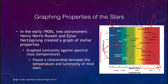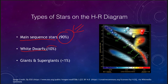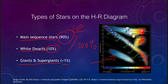When we look at an HR diagram, we find different types of stars. Primarily, 90% of the stars we plot are main sequence stars. White dwarf stars make up about 10% and fall in the lower left. Then there are giants and supergiants — less than 1% of the stars — so a very small percentage in the HR diagram.